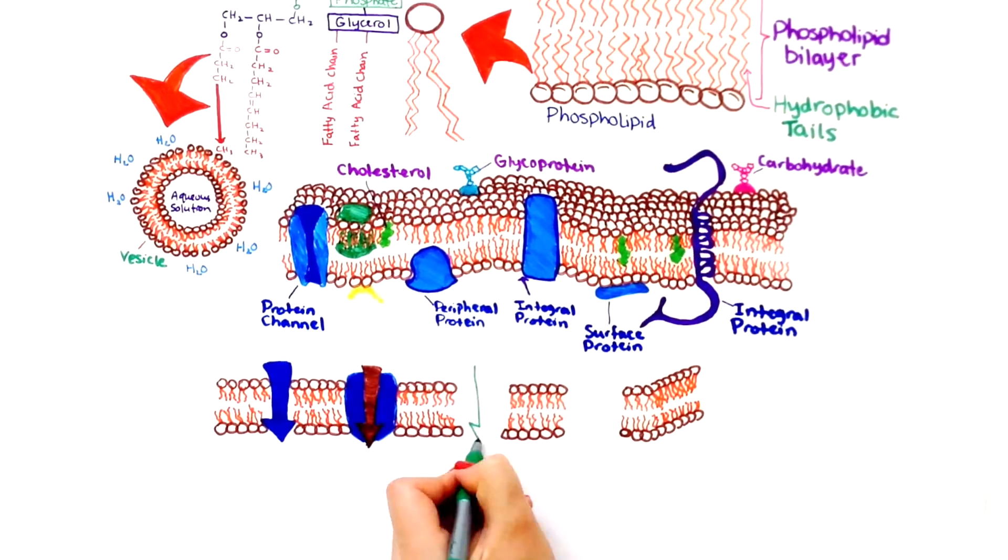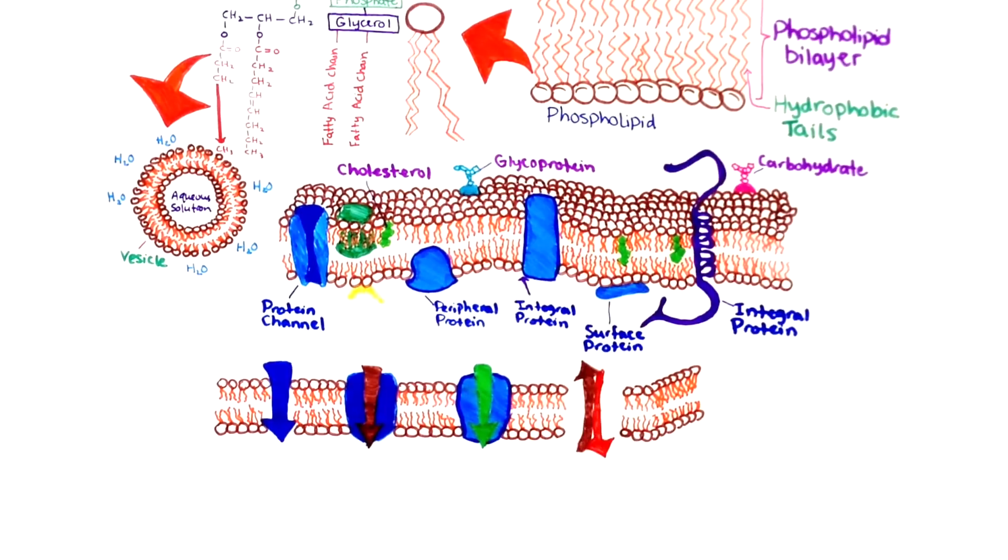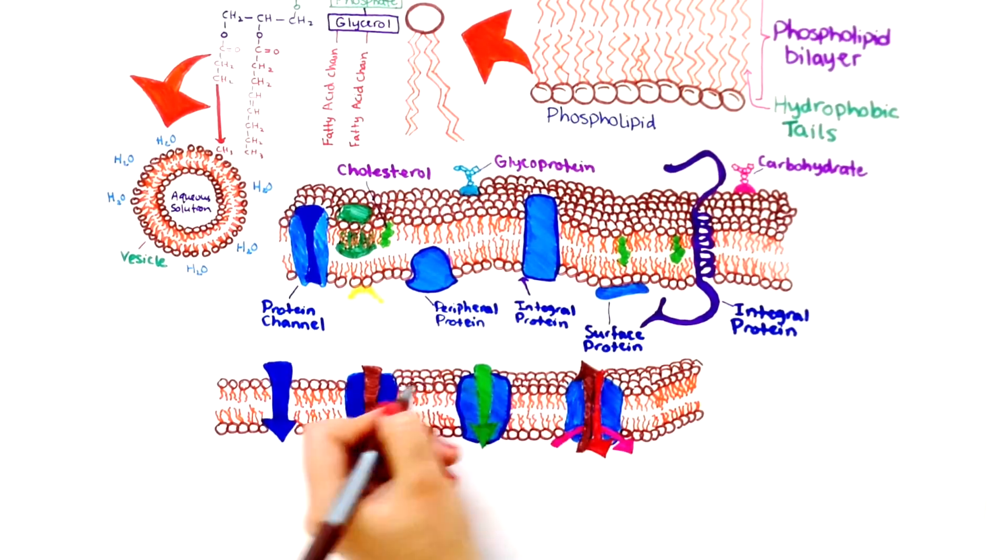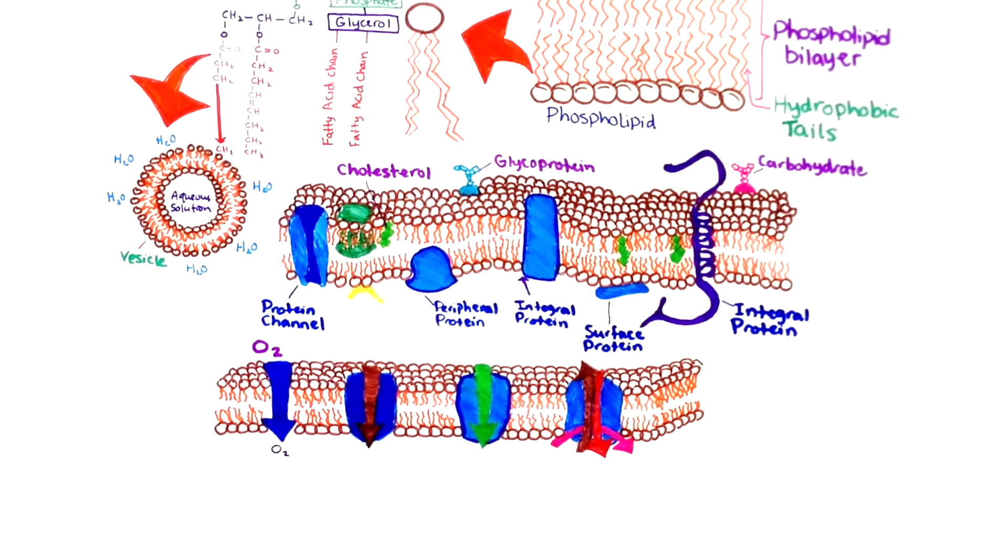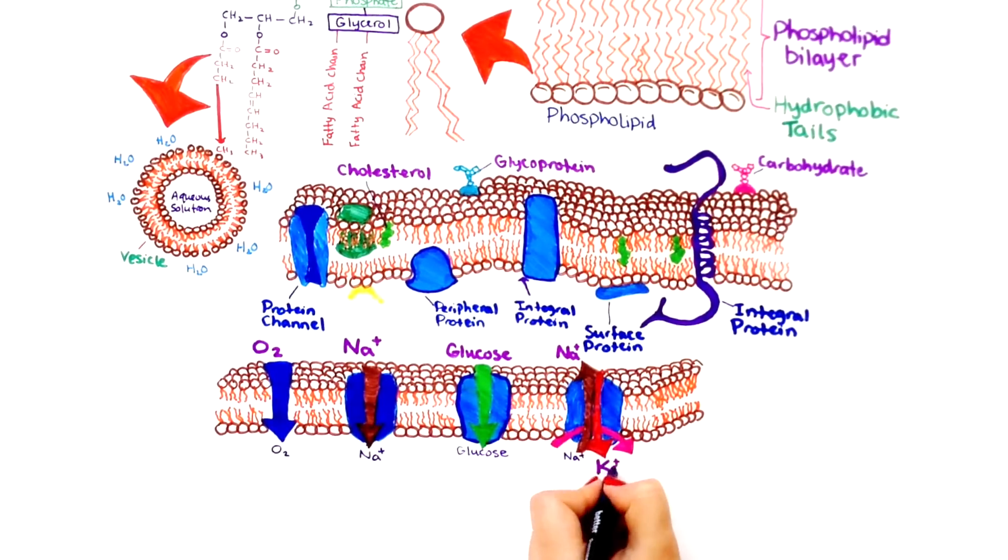The interior of the phospholipid bilayer is hydrophobic, so only very small, neutrally charged molecules like oxygen or carbon dioxide can pass freely through the membrane. Everything else must pass through a transmembrane protein, meaning the cell has general control over what gets in and what gets out.